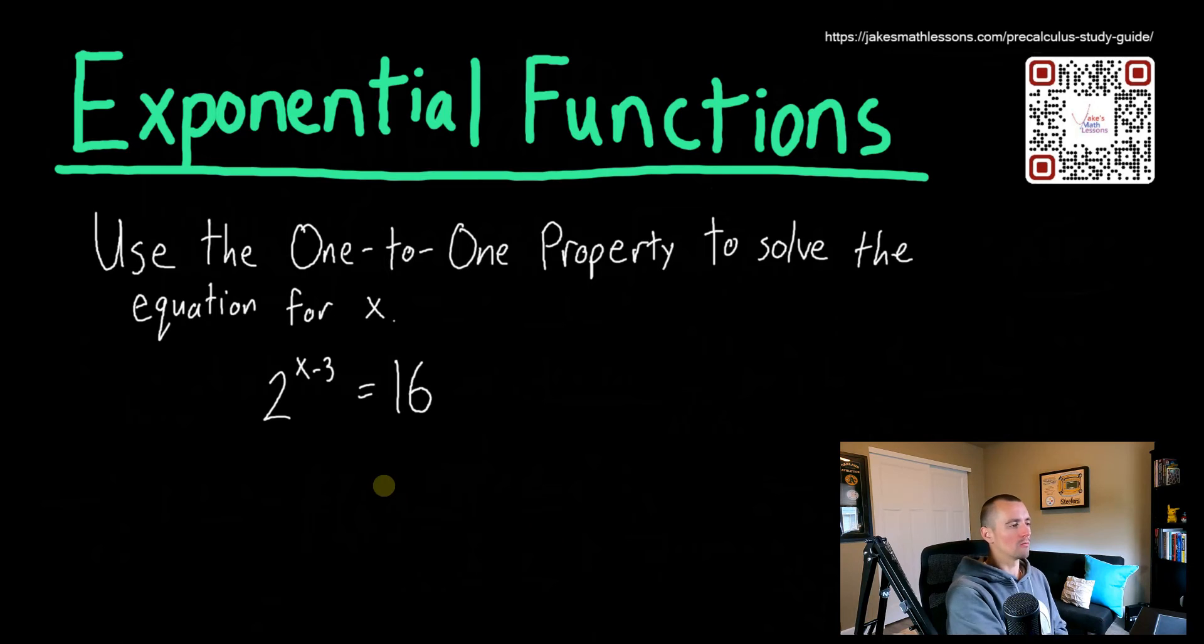So real quick just to provide a little bit of background on this kind of problem. This right here, 2 to the x minus 3, is an example of an exponential function. An exponential function is one where you have basically some base, some constant number base like a, for example, raised up to something with an x in the power. There could be other stuff here. You may even have another number multiplied out front.